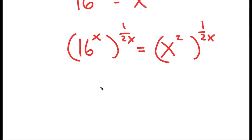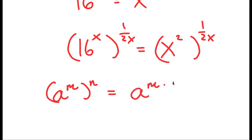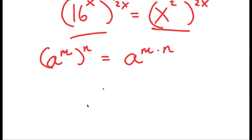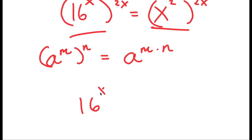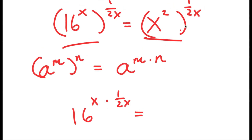Now, if I have something in the form a to the power of m to the power of n, this is equal to a to the power of m times n. So we can use this property for both of these terms. 16 to the power of x to the power of 1 over 2x is equal to 16 to the power of x times 1 over 2x. And x to the power of 2 to the power of 1 over 2x is equal to x to the power of 2 times 1 over 2x.